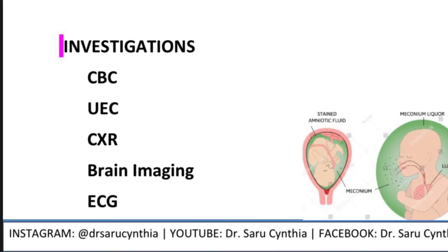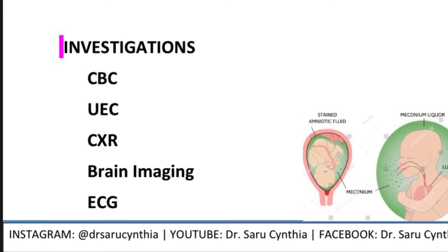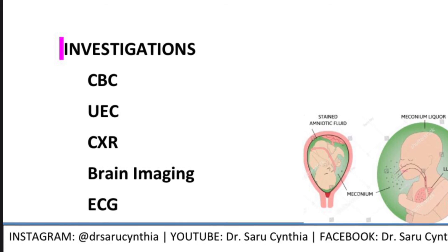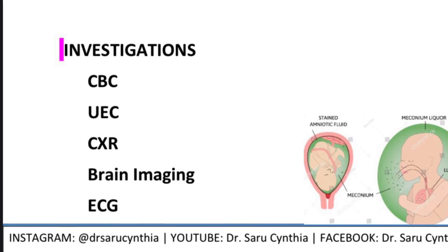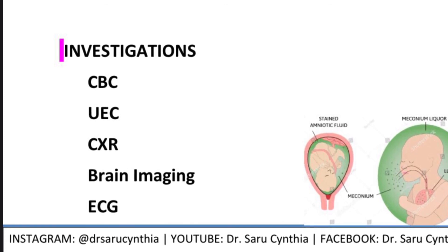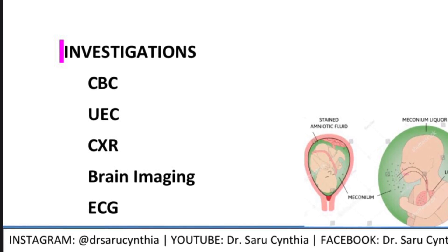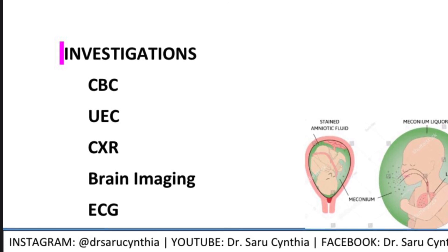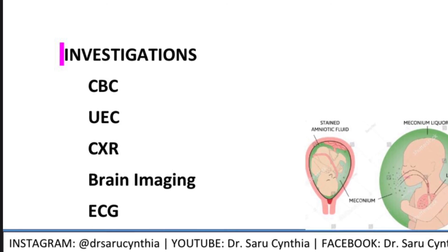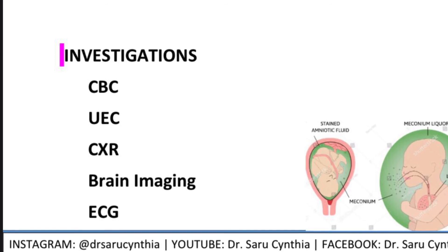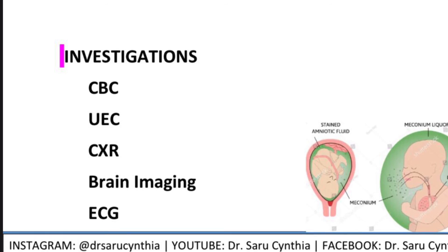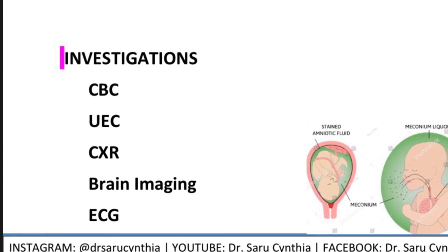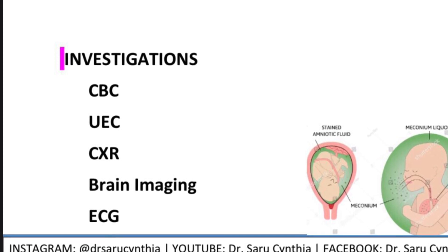For investigations, you have lab work and imaging. For lab work, you need a CBC — in chronic hypoxia you can see polycythemia. It also affects your electrolyte balance, so serum electrolytes (UEC) are very important. Acid-base status is also important because these neonates are susceptible to AKI. For imaging, a chest X-ray is needed to check for lung collapse, air trapping, and related findings.